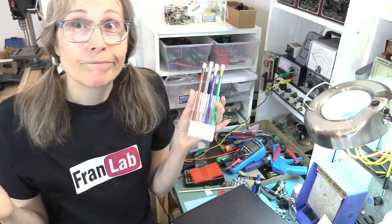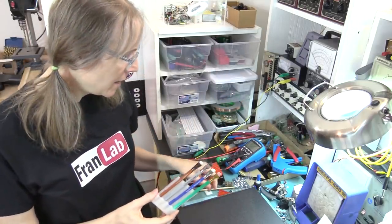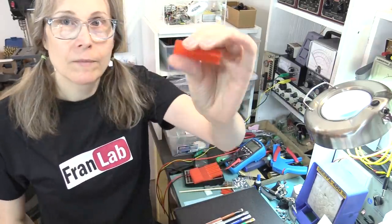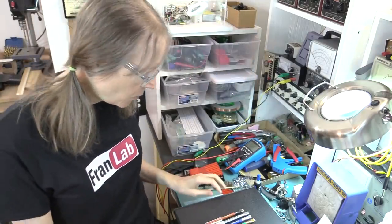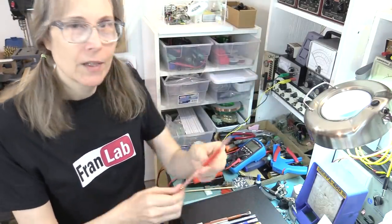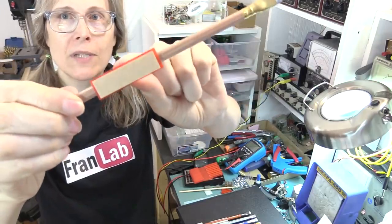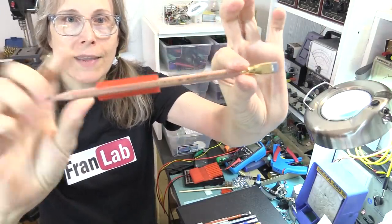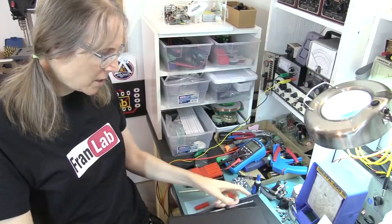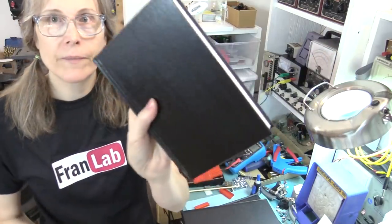And I even made a simpler, like a one-off version, like this. Which you can tack, again, the 3M tape right there. And you can tack that to smaller sketchbooks, like this is a smaller one.